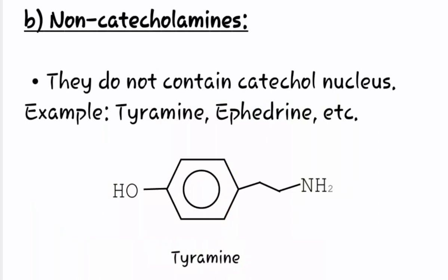The second type is non-catecholamines. They do not contain a catechol nucleus in their structure. Examples are tyramine, ephedrine, etc. This is the structure of tyramine, and it does not contain any catechol nucleus in its structure.